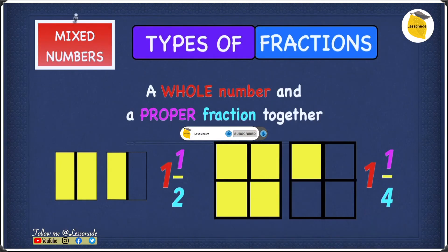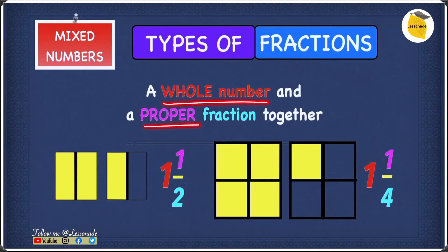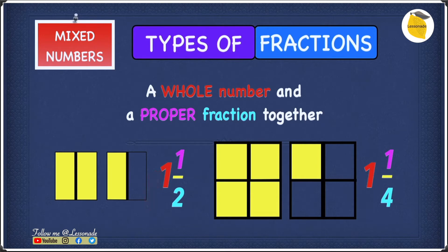Let's have a look at our third type of fraction, which is mixed numbers. A mixed number is a whole number and a proper fraction together. So if you have a look over here, we have a whole number, which is 1, and we also have a proper fraction, which is 1 over 2. Because a proper fraction is when the numerator, which is 1, is smaller than the denominator, which is 2. So therefore, 1 and 1 over 2 is a mixed number.